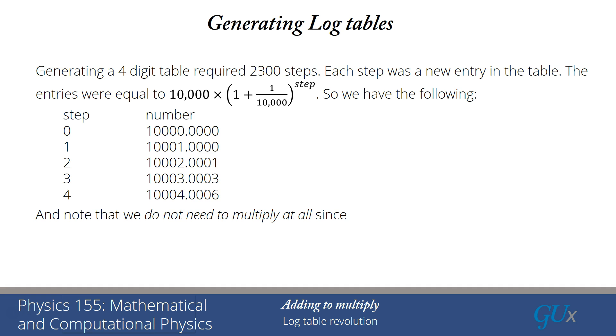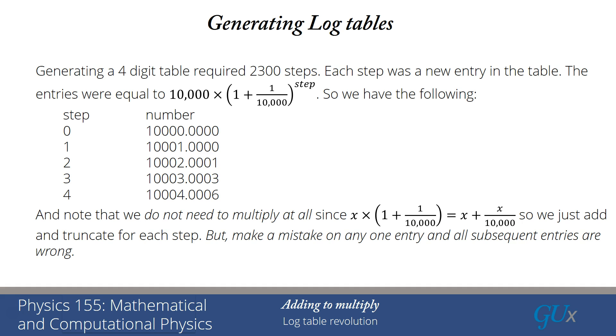Well, we actually don't do any multiplication at all. Because some number x multiplied by 1 plus 1 over 10,000, I can distribute the x inside the parenthesis, and I get it's equal to x plus x divided by 10,000. Well, now x divided by 10,000 I can easily get. I just shift the decimal point by four places. And so it's easy to add those numbers together to get the multiplication. I then truncate anything that is beyond the digits of accuracy that I'm going to maintain.